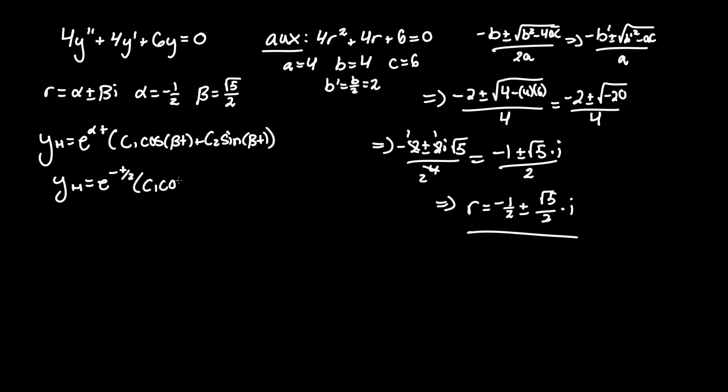times c₁cos(√5/2 × t) plus c₂sin of the same thing, √5/2 × t. And that's everything we need.